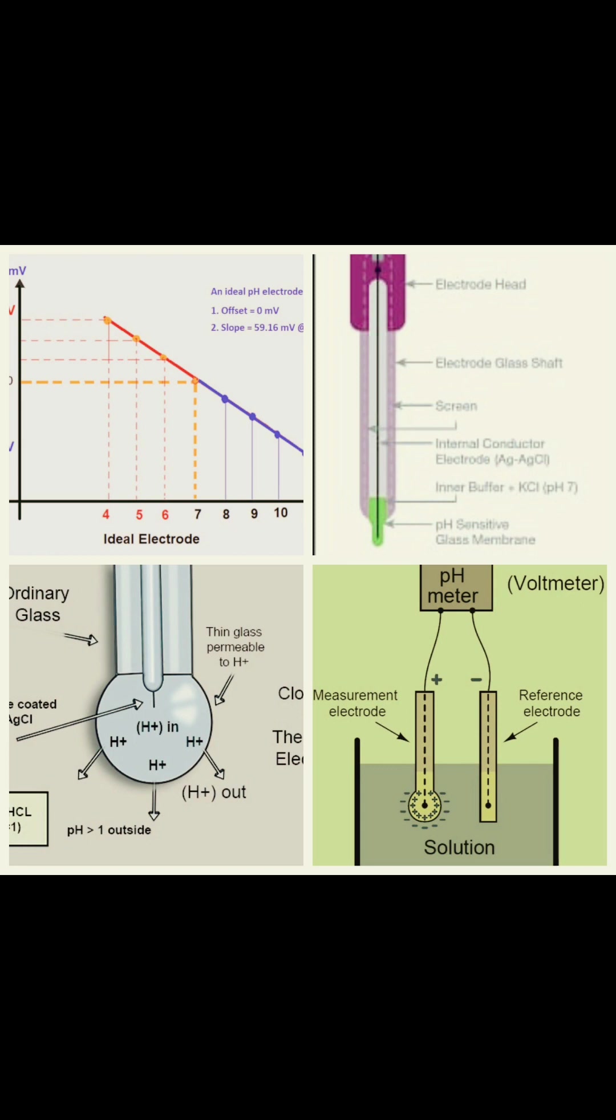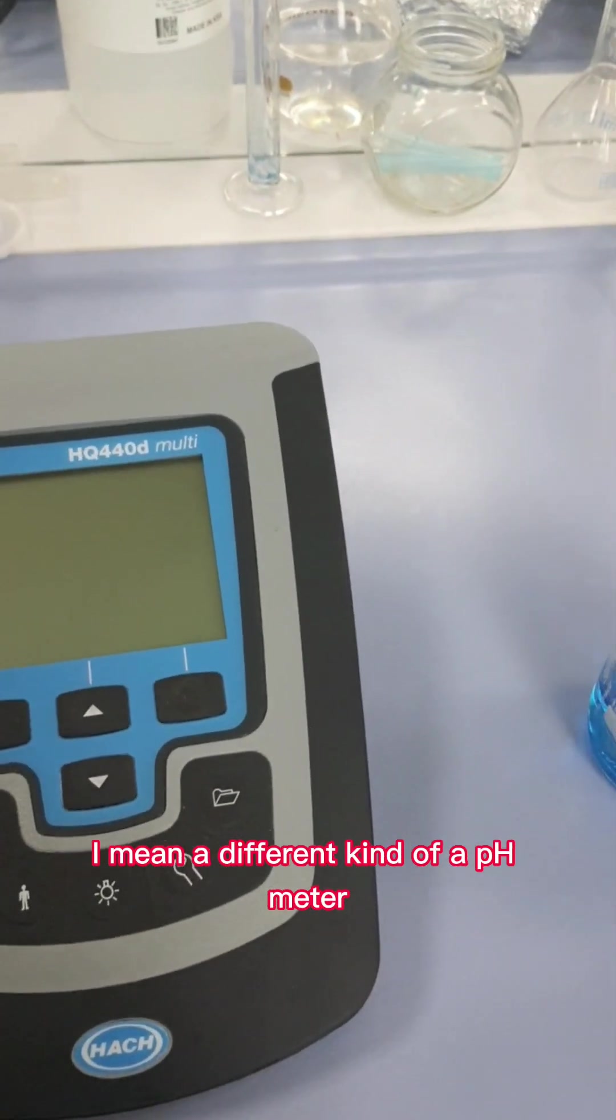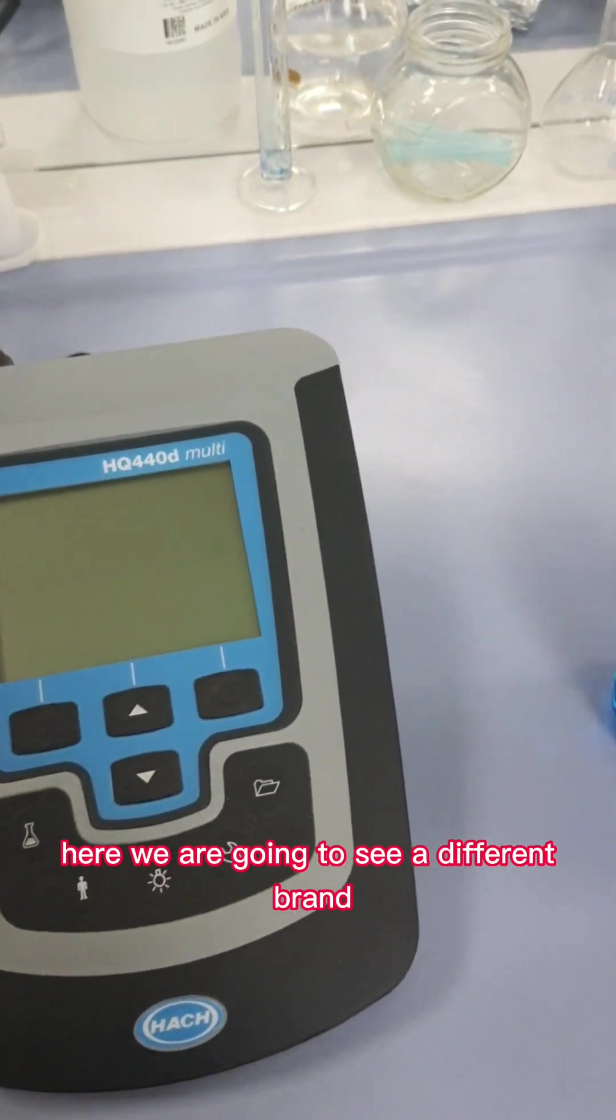Normally we have to use the three-point calibration, and this is very important before measuring the pH of an unknown solution. In our previous videos we also saw a different kind of pH meter. Here we are going to see...